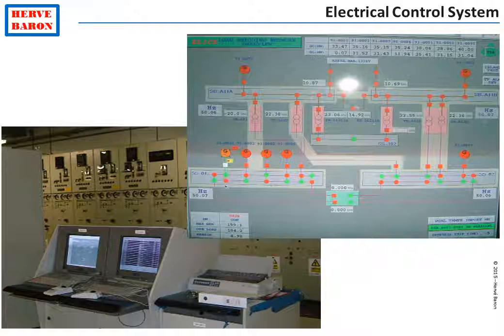A load-shedding system is implemented so that in case of loss of main power generators, the limited essential power available from the emergency generators is fed to essential consumers only. This load-shedding, together with other monitoring and control functions of the electrical system, is performed in the electrical control system, also called the Power Distribution Control System (PDCS). Now, let's look at the drawings produced to install all this equipment at site.